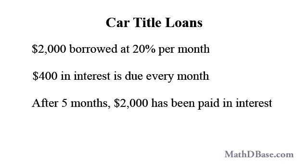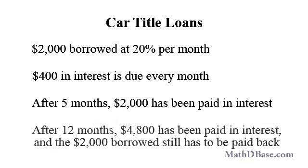After 5 months, $2,000 — 100% of the borrowed amount — will have been paid in interest. At the end of one year, 12 months, $4,800 — 240% of the borrowed amount — has been paid in interest, and the principal is still due.